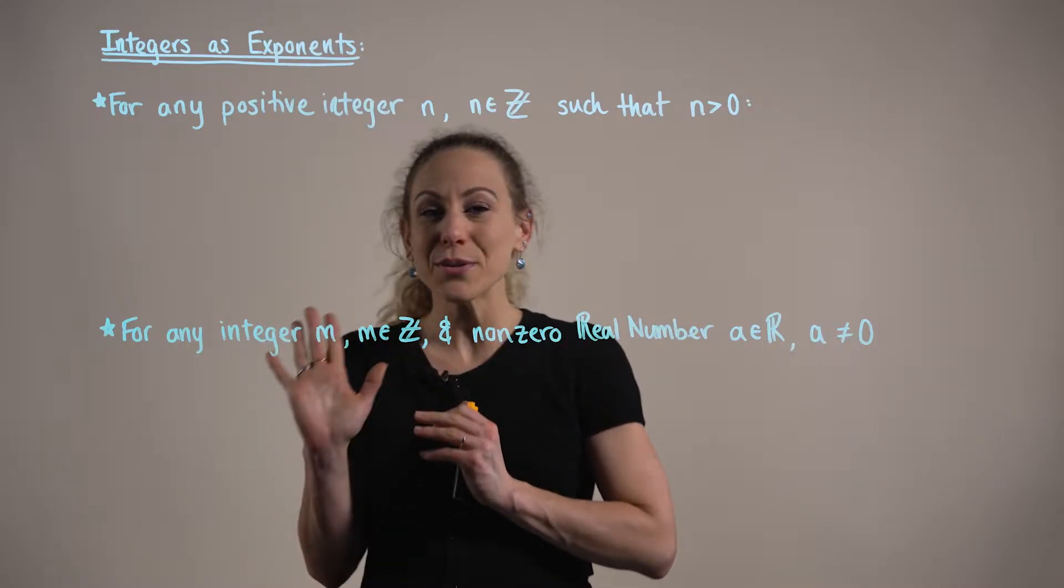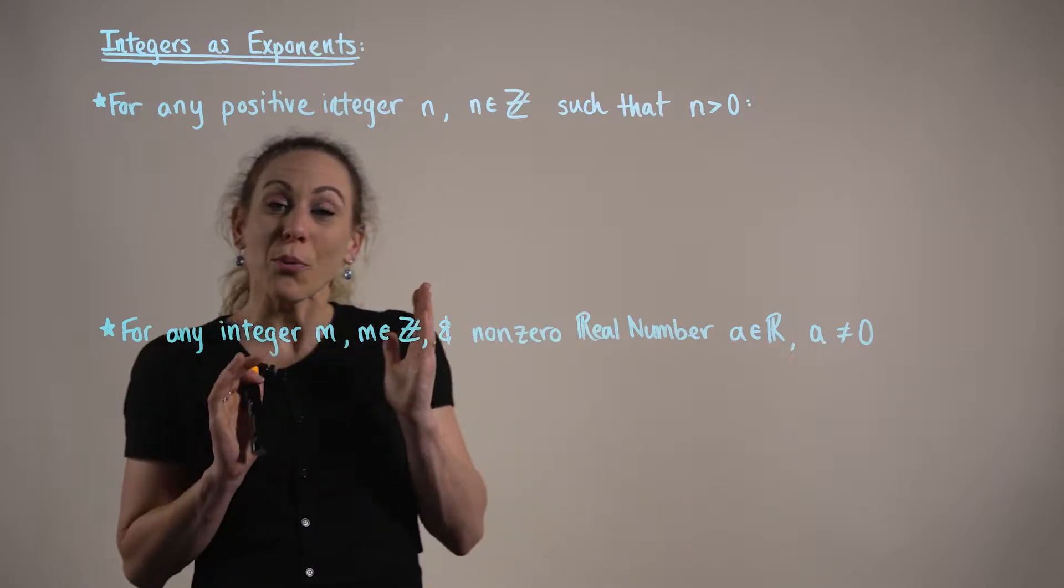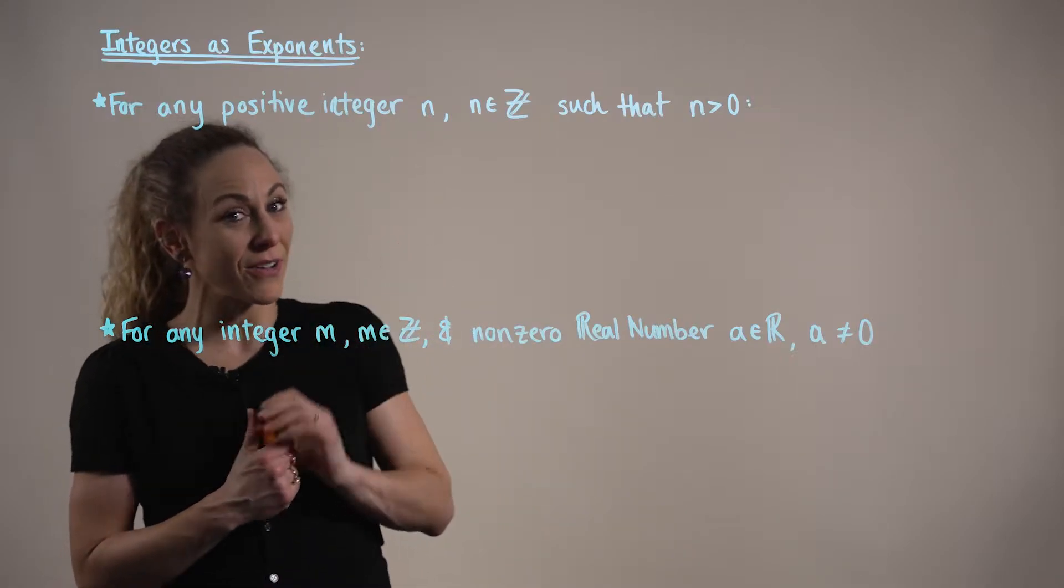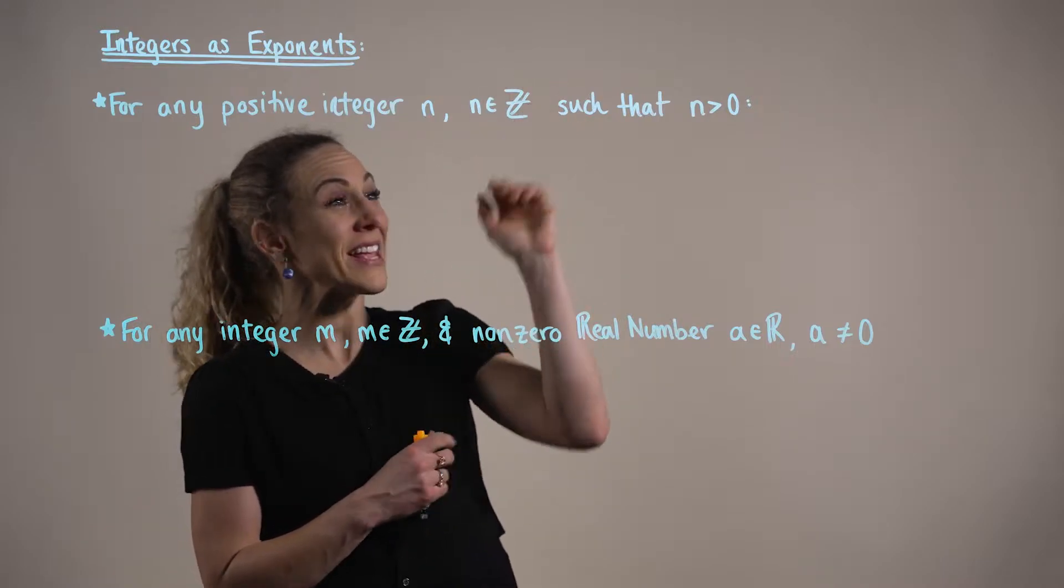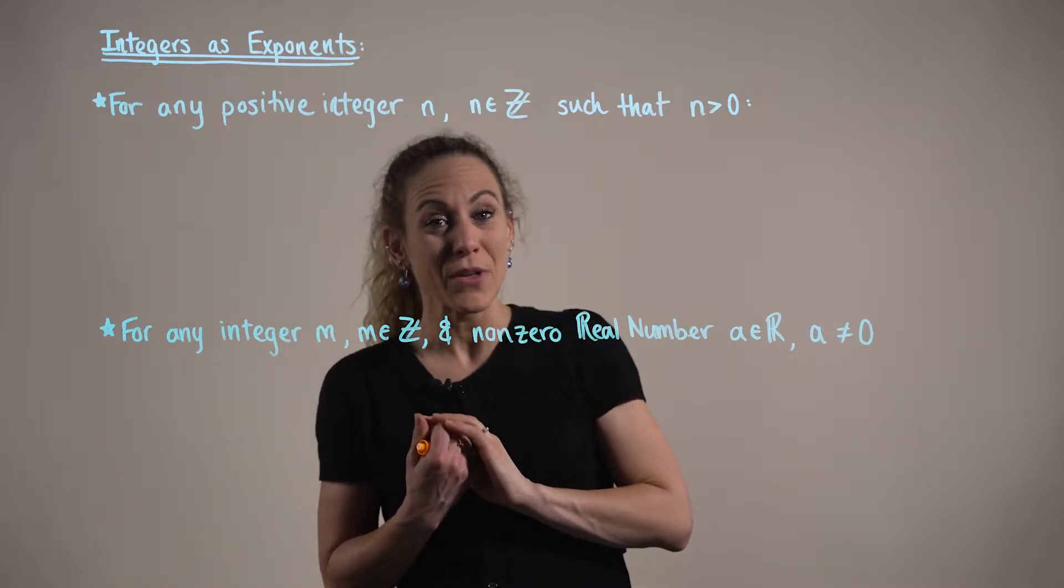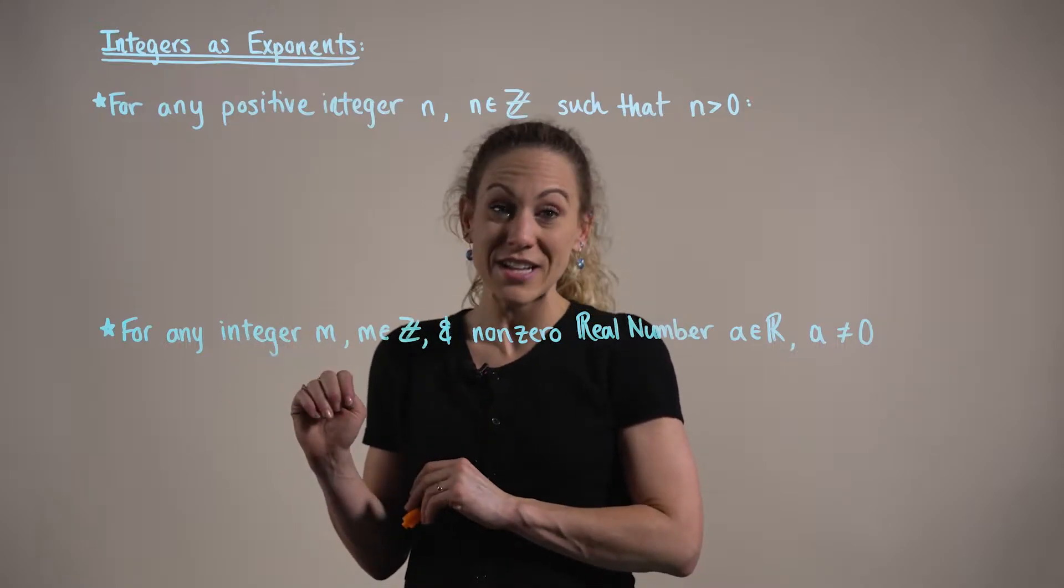Let's look at a formal definition. For any positive integer n, such that n is an element of the integers and n is greater than zero, we can write an exponential expression as follows.